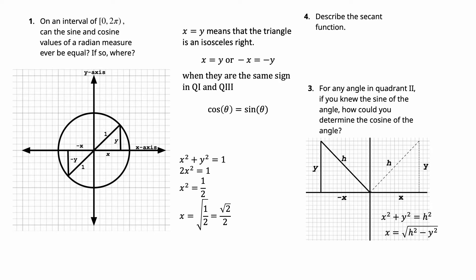We can calculate the sine and cosine values since we know x and y are equal. We take x² + y² = 1 (the Pythagorean theorem), substitute x for y to get 2x² = 1, divide by 2, take the square root, and rationalize. We get √2/2, which is also the y value since they're equal, and so we can find both sine and cosine.